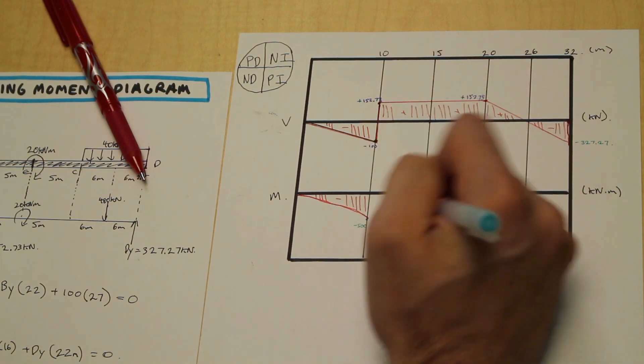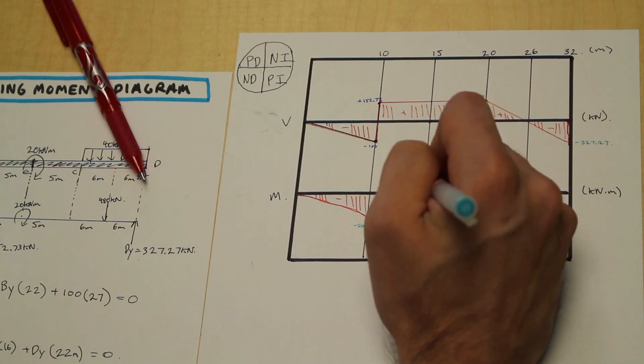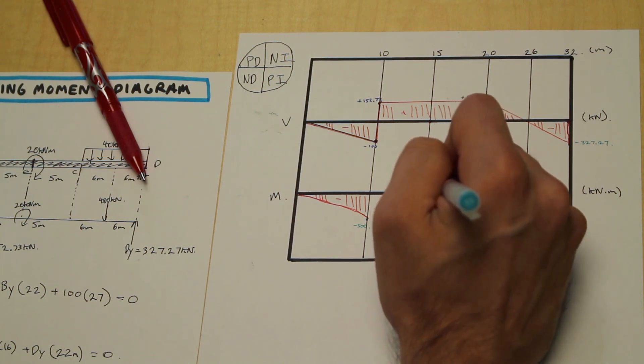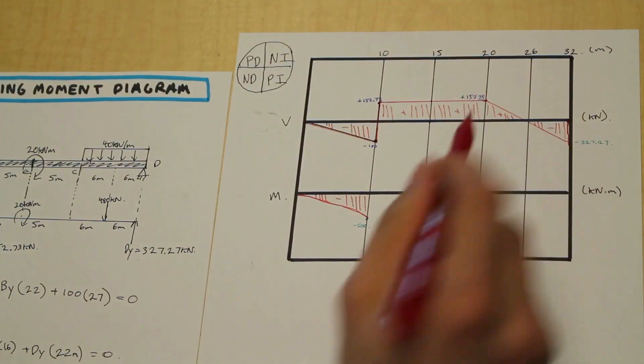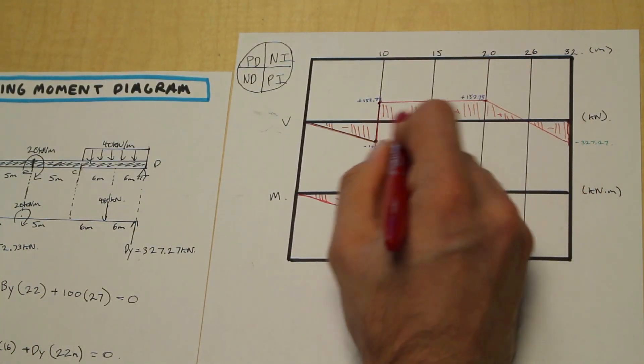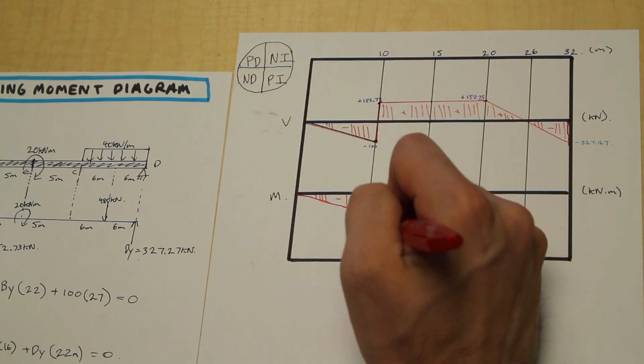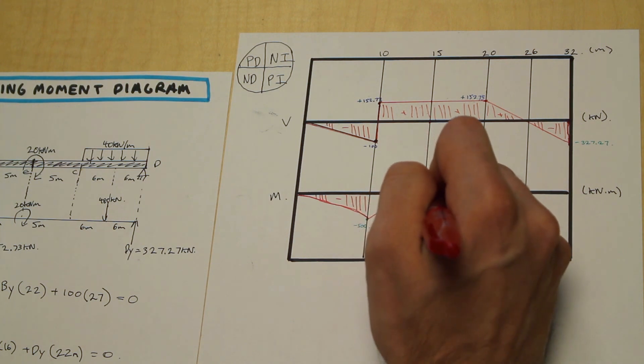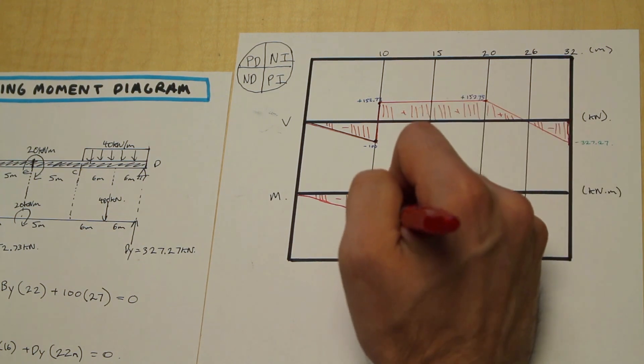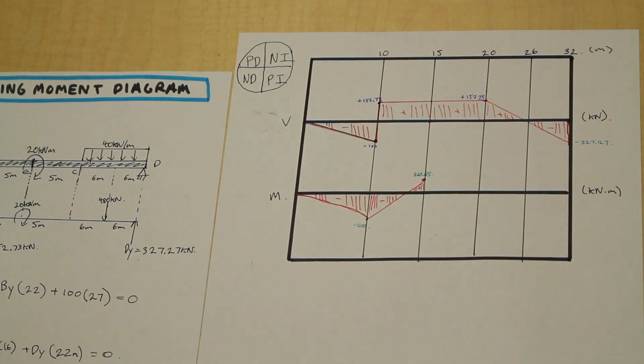And that's going to come all the way over here as we discussed, 263.65, and that is linear, it's not increasing or decreasing, so that's going to look like this. Perfect.